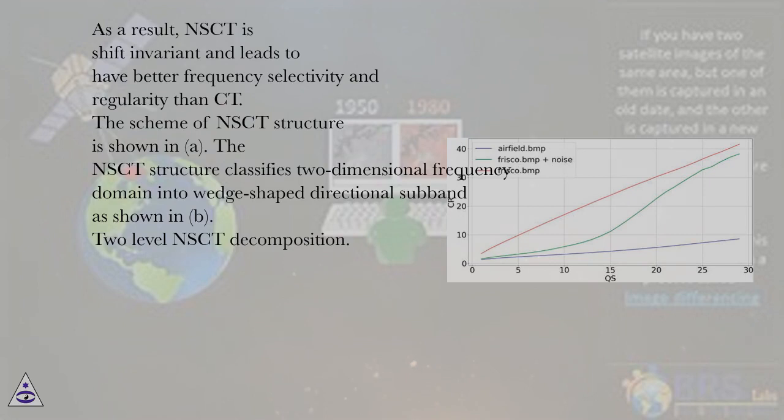As a result, NSCT is shift invariant and leads to better frequency selectivity and regularity than CT. The scheme of NSCT structure is shown in (a). The NSCT structure classifies two-dimensional frequency domain into wedge-shaped directional subband as shown in (b). Two-level NSCT decomposition.